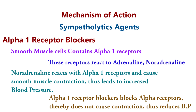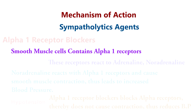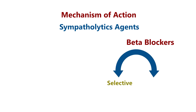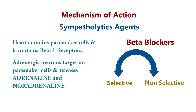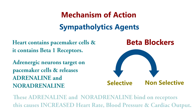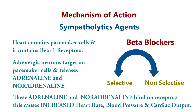Beta blockers are either selective or non-selective. Heart pacemaker cells contain beta 1 receptors. Adrenergic neurons release adrenaline and noradrenaline, which bind to beta 1 receptors, increasing heart rate, cardiac output, and blood pressure. Beta blockers block these beta 1 receptors, thereby decreasing heart rate, cardiac output, and blood pressure.